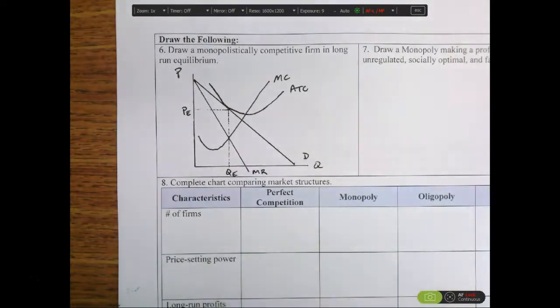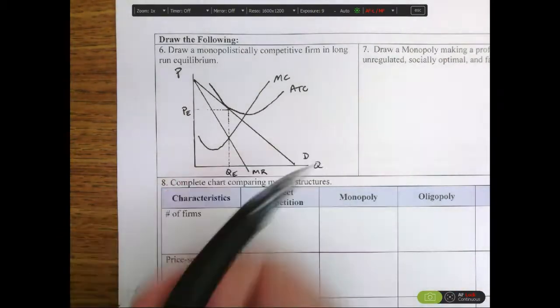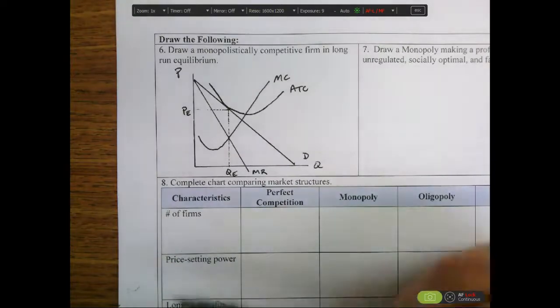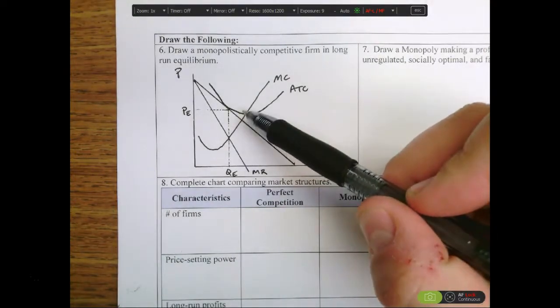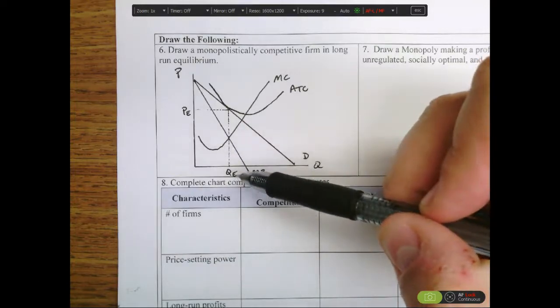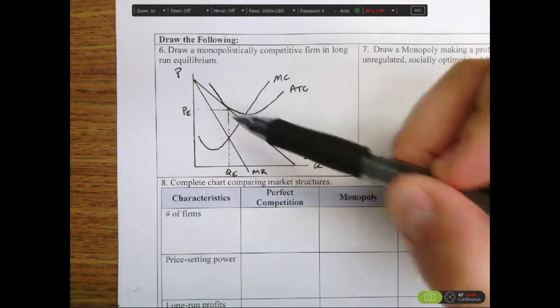And if there's a loss, then firms would have left the industry, and that would cause the demand curve and the marginal revenue curve to shift to the right until we get to this point here where we have a point of tangency between the average total cost curve and the demand curve. It's at that point where at this optimal quantity our price equals average total cost, and we have zero profit.